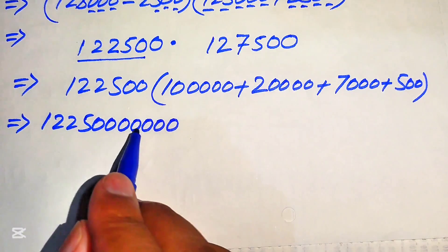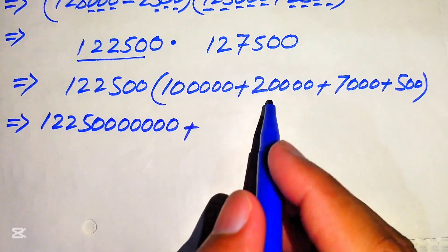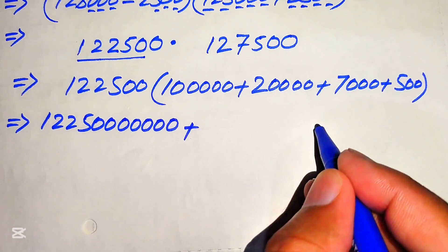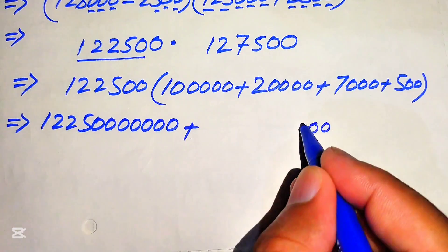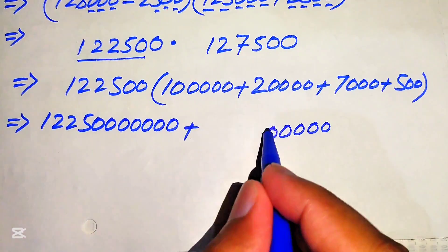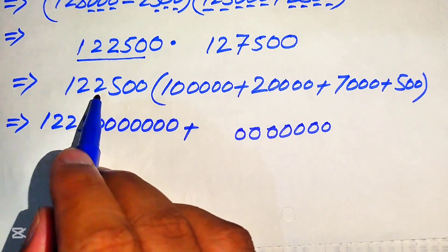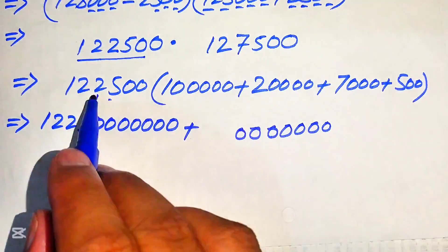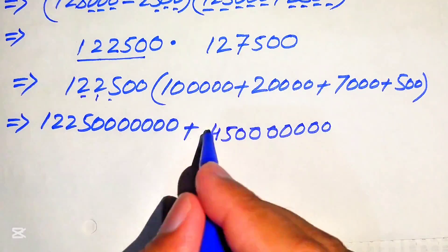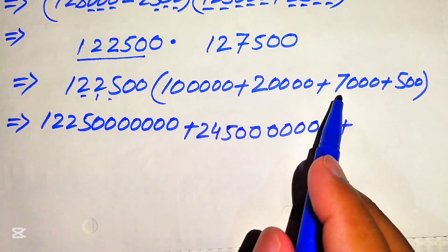Multiplying 122,500 by 20,000: place 4 zeros, then multiply by 2 — 2 times 0 is 0, 2 times 0 is 0, 2 times 5 is 10 (write 0 carry 1), 2 times 2 is 4 plus 1 is 5, 2 times 2 is 4, 2 times 1 is 2. Then multiply 122,500 by 7,000.